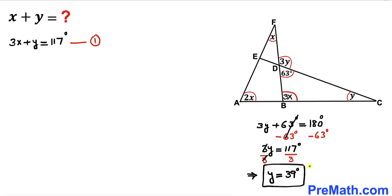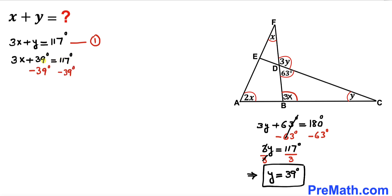Now that we've found y equals 39 degrees, let's substitute this into equation one, replacing y with 39 degrees. Equation one becomes 3x plus 39 degrees equals 117 degrees. Subtracting 39 degrees from both sides, 3x equals 78 degrees. Dividing both sides by 3, angle x turns out to be 26 degrees.